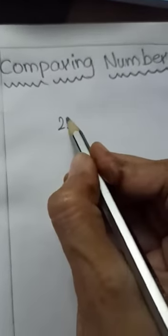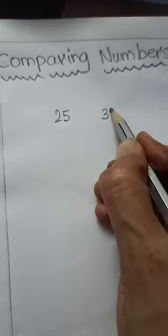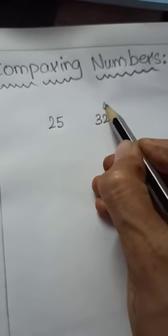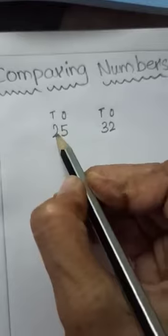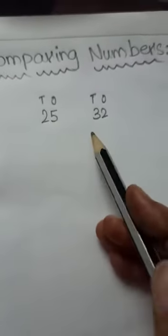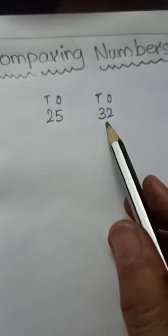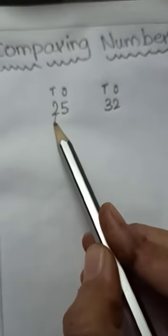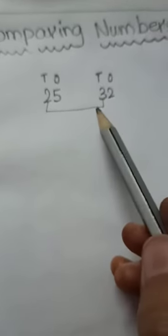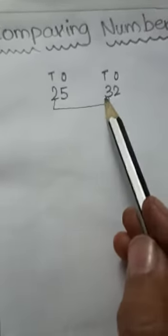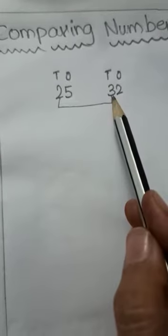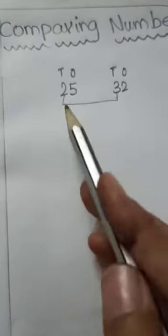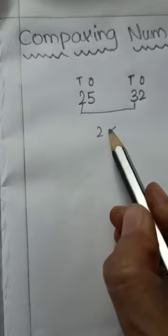Comparing numbers. Suppose here we have the numbers 25 and 32. This 2 is on the 1's place and this 3 is on the 10's place. Similarly, 5 is on the 1's place and 2 is on the 10's place. In comparing a two-digit number, we first find the bigger digit in the 10's place. So we compare the numbers on the 10's places: 2 and 3. Which number is greater? 3 is greater than 2, or 2 is less than 3.